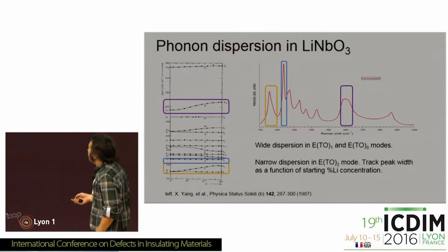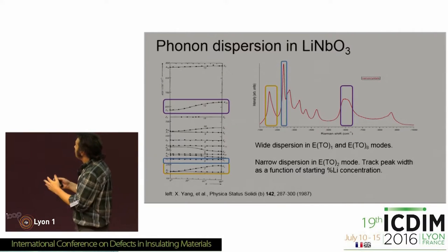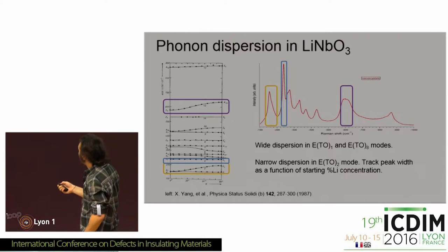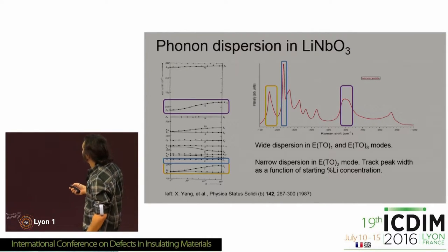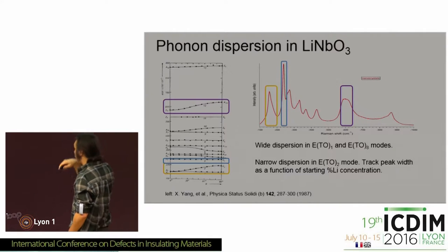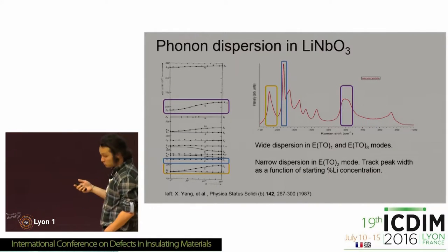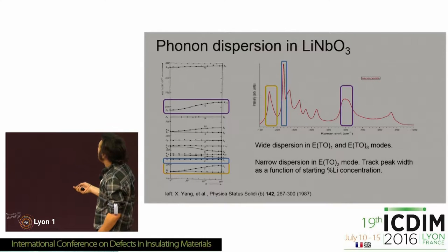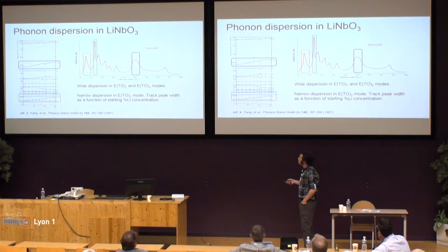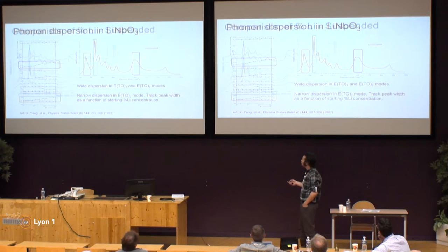If you want to get some information from the peak width, it probably wouldn't be good to use something affected by the directional dispersion. You'd rather want to use something mostly insensitive to the directional dispersion. So I looked at the ETO2 mode and looked at the peak width of the ETO2 mode as a function of the starting lithium concentration.